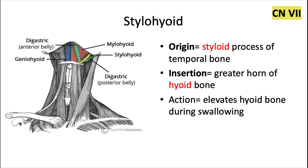The stylohyoid muscle is going to originate from the styloid process of the temporal bone, and it inserts into the hyoid bone, specifically the greater horn of it. The action is to elevate the hyoid bone during swallowing.